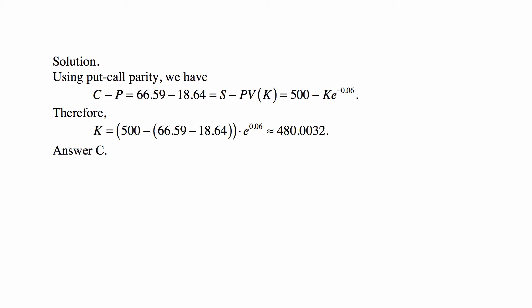Obviously, you can see that the only unknown is K. We solve this as an equation for K, and we get K equals 500 minus 66.59 minus 18.64. The whole quantity of 500 minus that difference is multiplied by e to the 0.06, and we get almost exactly 480, which is answer C.